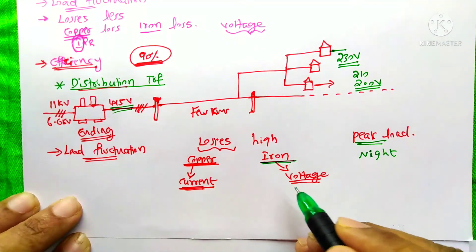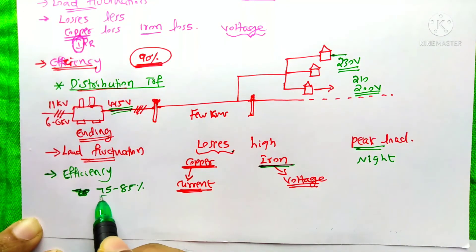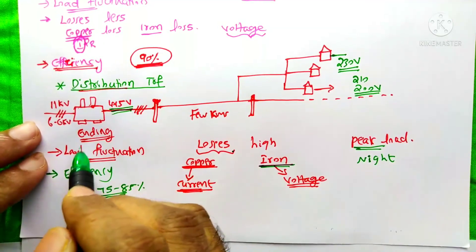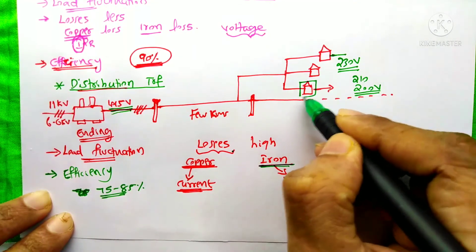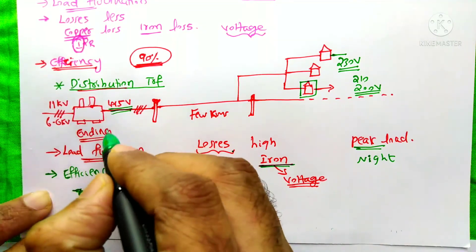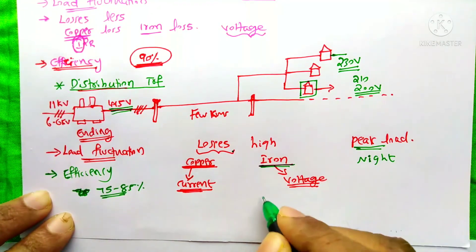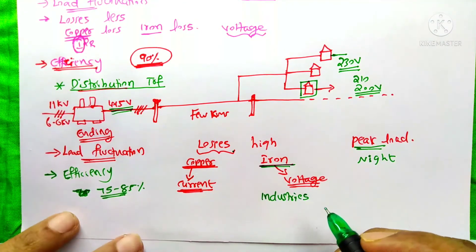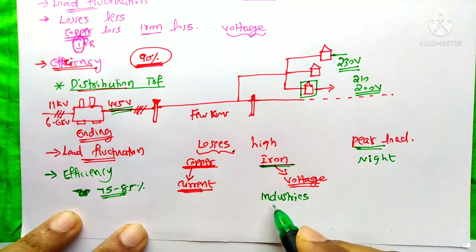Due to the iron losses and high losses overall, the efficiency of the distribution transformer is always around 75 to 85%. If it is installed in a locality, we cannot predict when loads will be switched on or off, so losses will be more and the lifetime of the distribution transformer will be less — it will be damaged more easily. But in the case of industries, the situation is the opposite, because engineers maintain their loads efficiently, and the transformer's lifetime will be more.